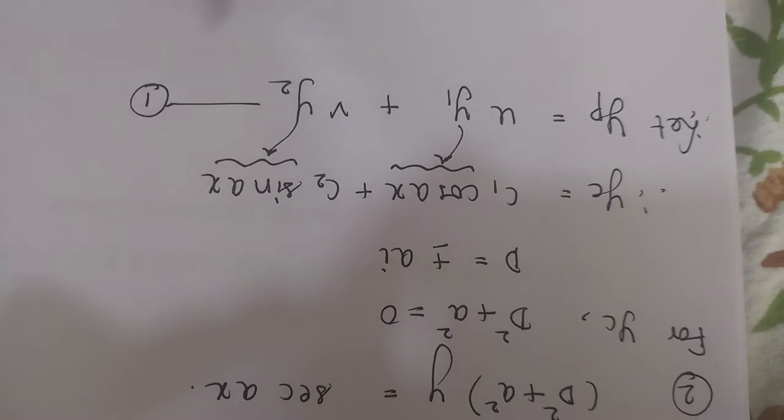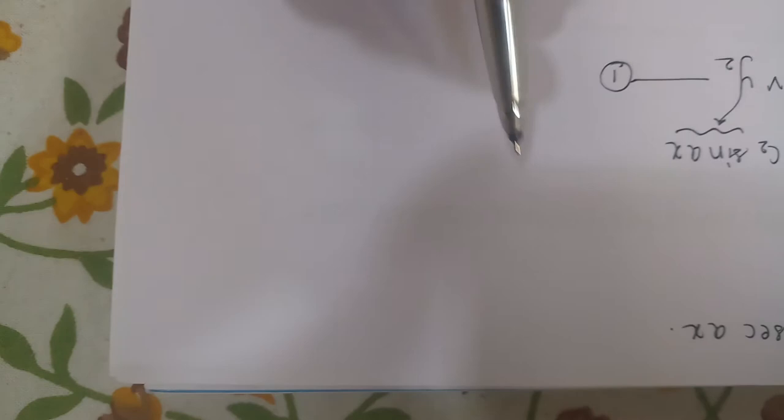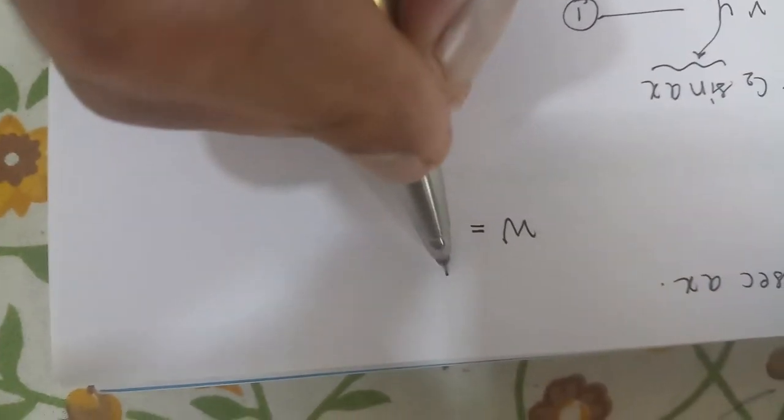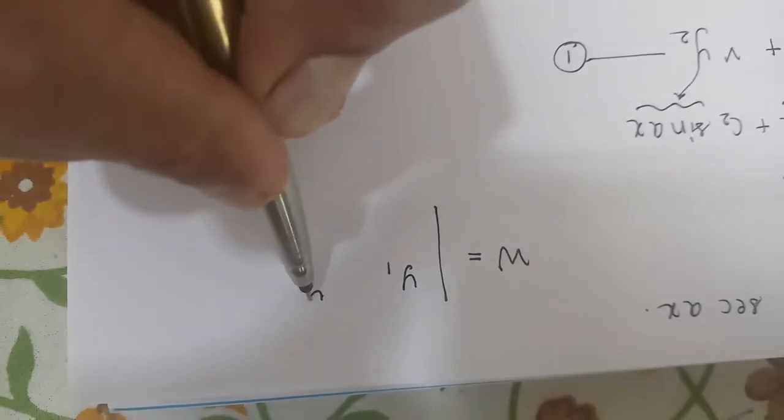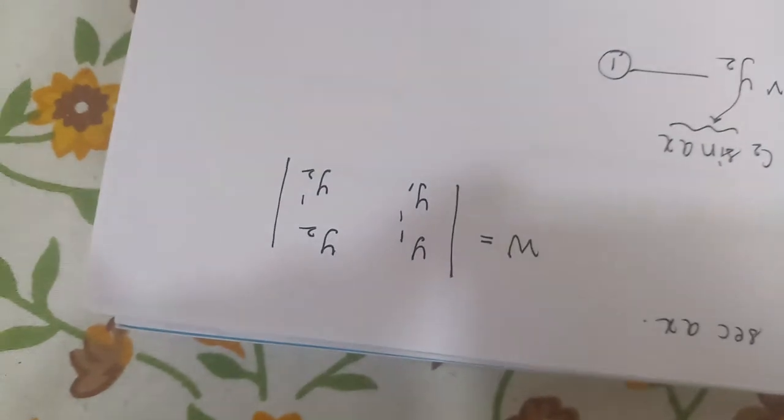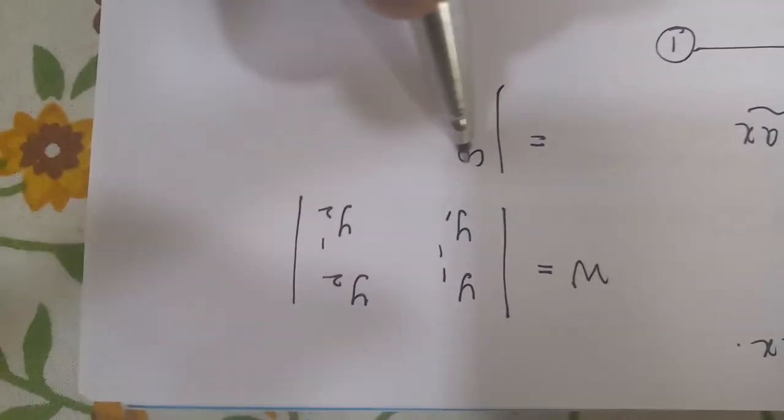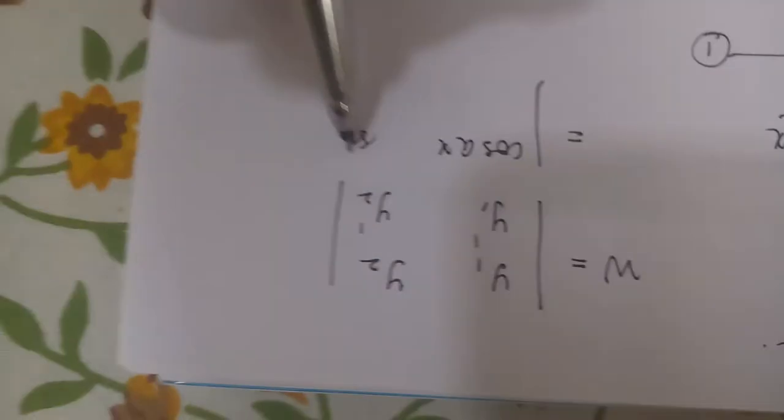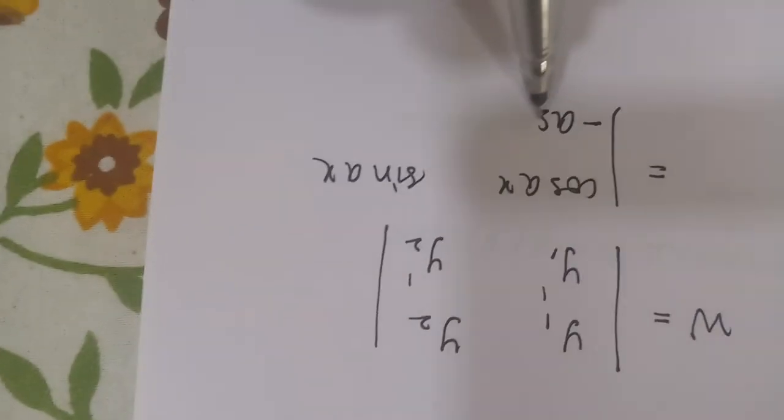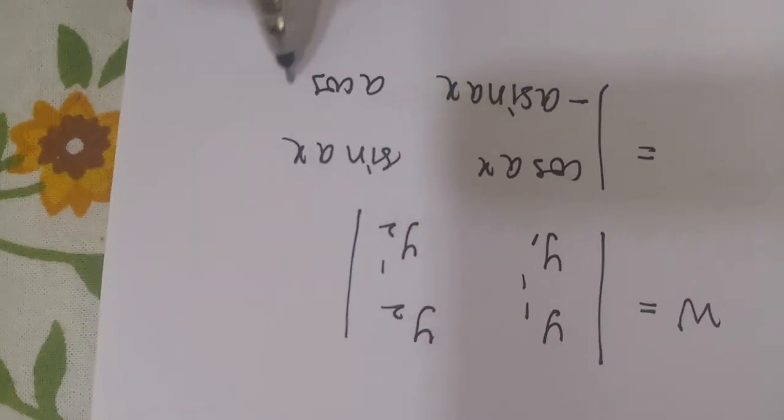So let this be our equation 1. As we have seen in our previous question also, u and v both depend upon something called as W, which is nothing but the determinant of y1 y2 y1 dash y2 dash. That means it will be cos ax sin ax, and cos ax derivative will be minus a sin ax, and sin ax derivative will be a cos ax.